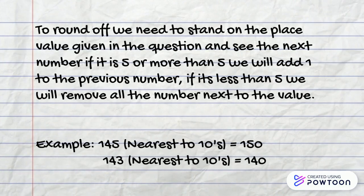To round off we need to stand on the place value given in the question and see the next number. If it is 5 or more than 5 we will add 1 to the previous number. If it's less than 5 we will remove all the number next to the value. Example: 145 nearest to tens is 150. 143 nearest to tens is 140.